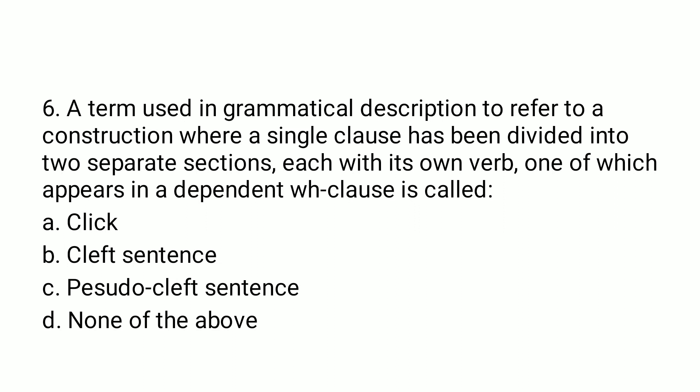The sixth question defines a term used in grammatical description to refer to a construction where a single clause has been divided into two separate sections, each with its own verb, one of which appears in a dependent WH clause. This is the definition of a cleft sentence. For example, 'Mary is driving a new car' can be cleft as 'It's Mary who is driving a new car' or 'It's a new car that Mary is driving', giving two separate sections from a single construction.